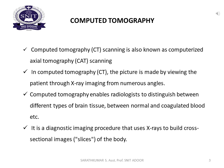Computer tomography — CT scanning — is also known as computerized axial tomography scanning. In computer tomography, the picture is made by viewing the patient through X-ray imaging from numerous angles. Computer tomography enables radiologists to distinguish between different types of brain tissue and between normal and coagulated blood.